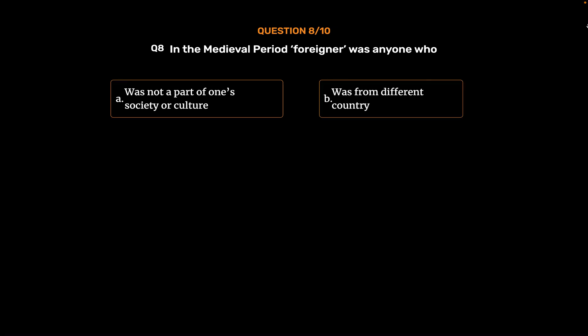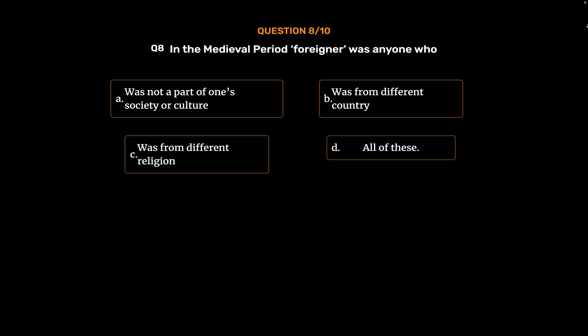Question No. 8. In the medieval period, a foreigner was anyone who: Option A: was not a part of one's society or culture. Option B: was from a different country. Option C: was from a different religion. Option D: All of these. The correct answer is Option A: was not a part of one's society or culture.